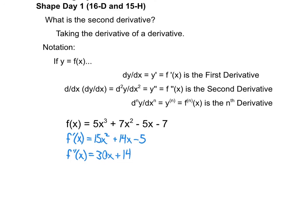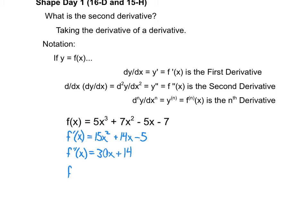If we wanted to keep going to the third derivative — note we put the little 3 in parentheses so you know it's not an exponent, it's the third derivative — that would equal 30. The fourth derivative would be 0. And the hundredth derivative? Also 0. Once we hit 0 with polynomials, all the rest are going to be 0.